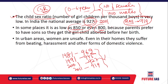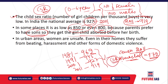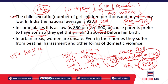In some places, the child sex ratio is as low as 850 or even 800 because parents generally prefer sons and don't prefer girls — girls are either killed or aborted even before birth. As per the 2011 census, Arunachal Pradesh has the highest child sex ratio among states at 972, while Haryana has the lowest at 834, which is an alarming figure. Among union territories, Andaman and Nicobar Islands has the highest child sex ratio at 968 as per the 2011 census.